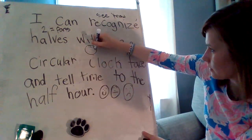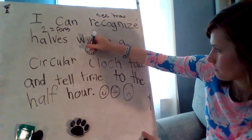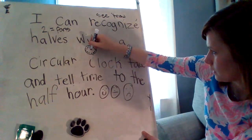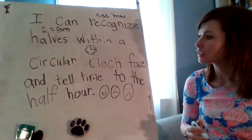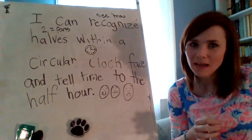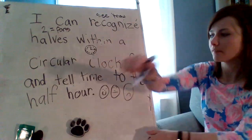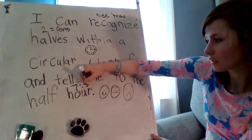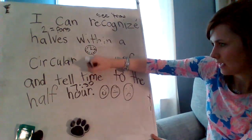I'm going to draw one right here for you — quickly, so it's not perfect but it's pretty good — within a circular clock face. And tell time to the half hour. So if it's the half hour, it's going to be 30 — so 7:30 or 3:30, anytime to the half hour.